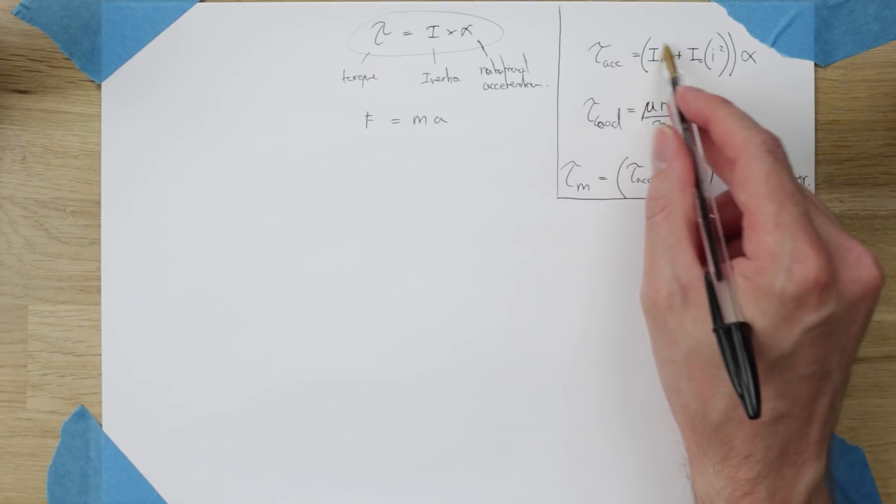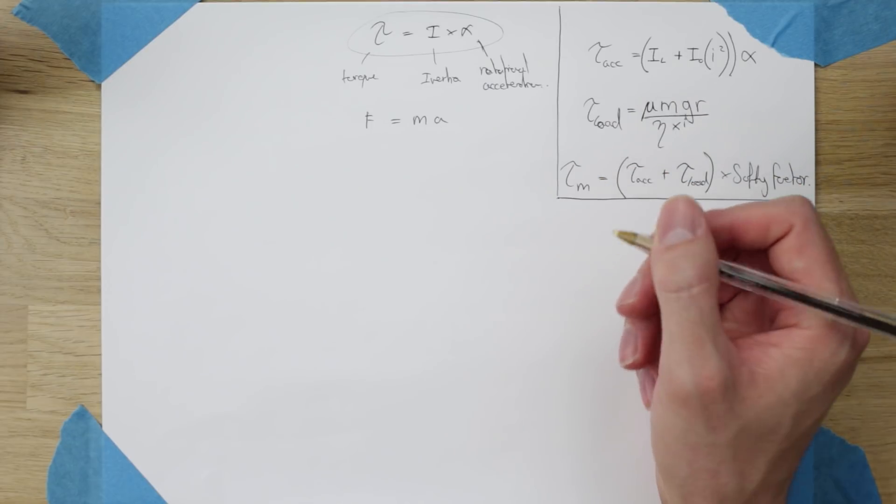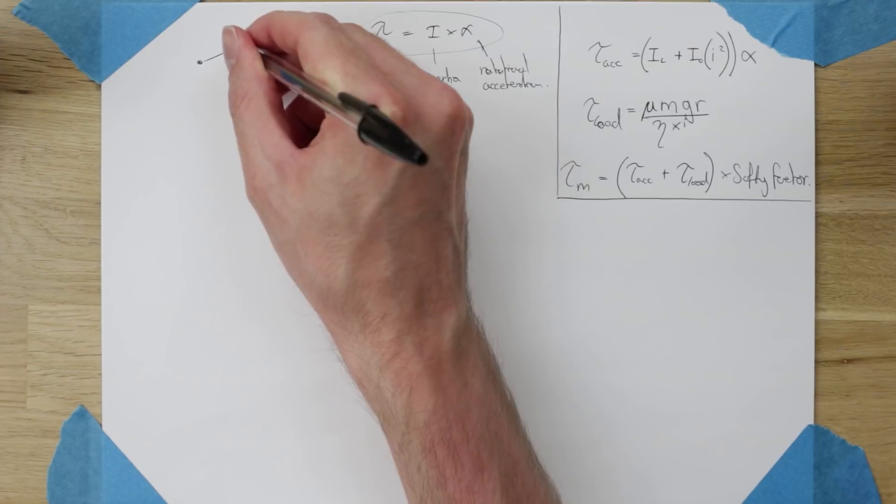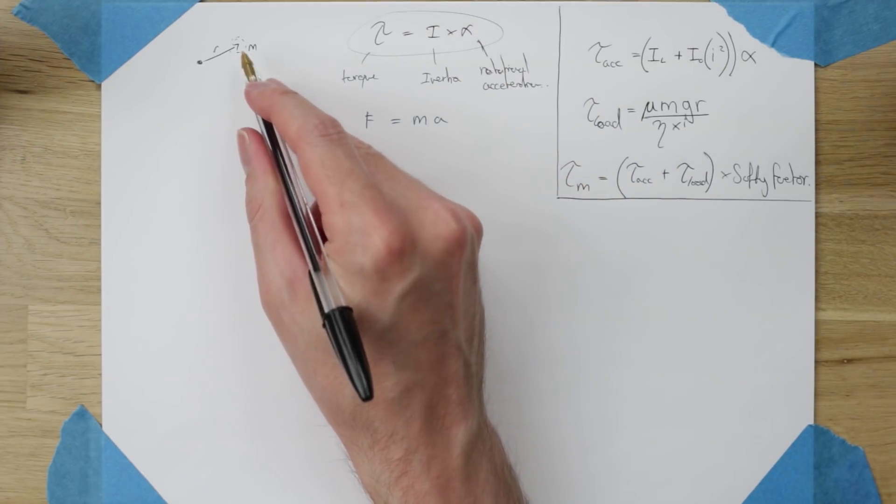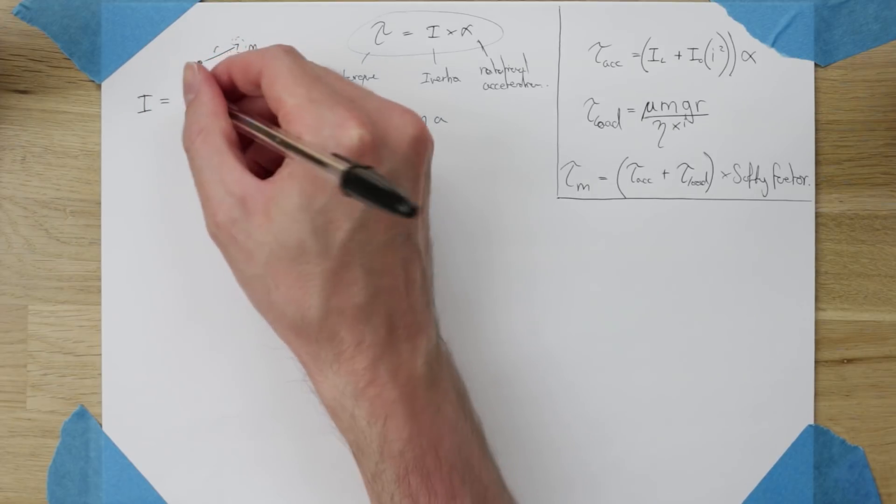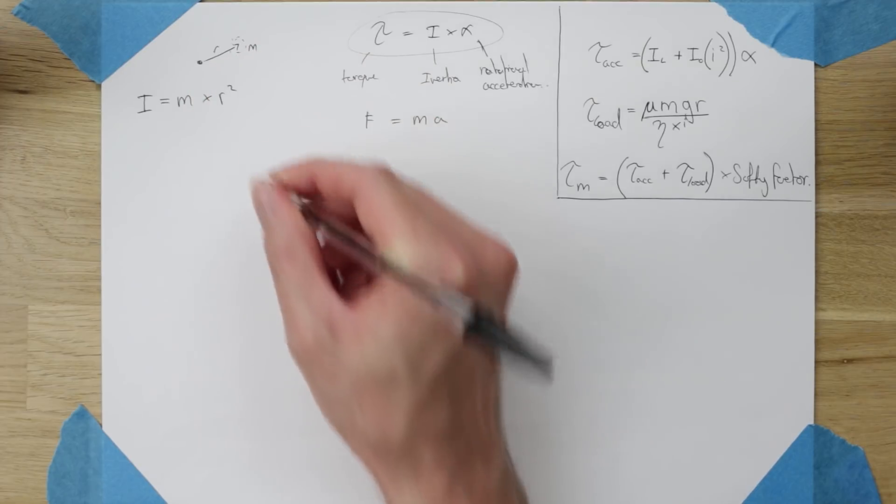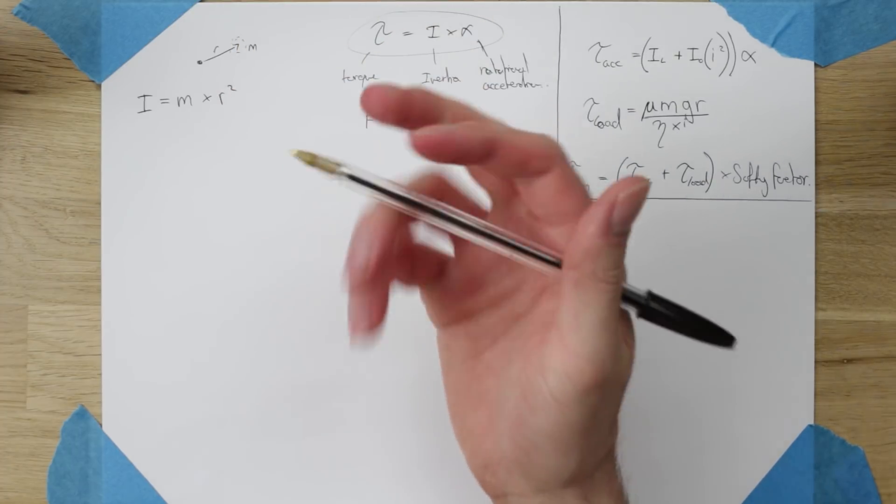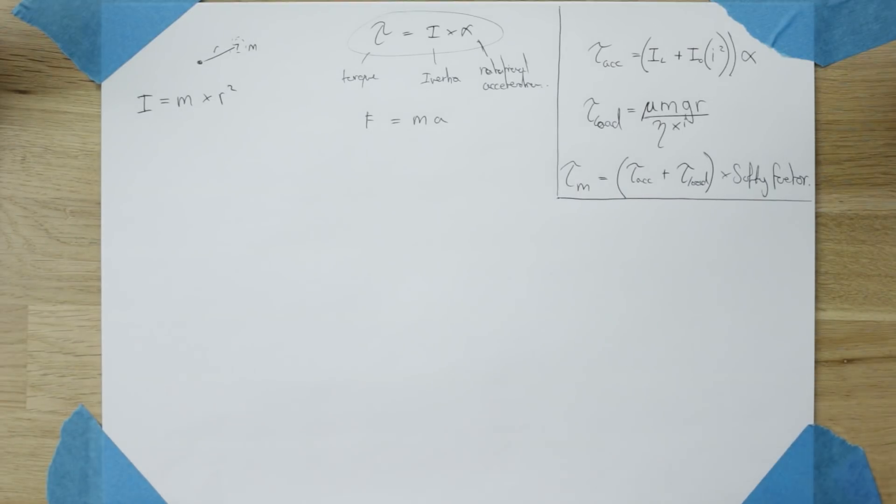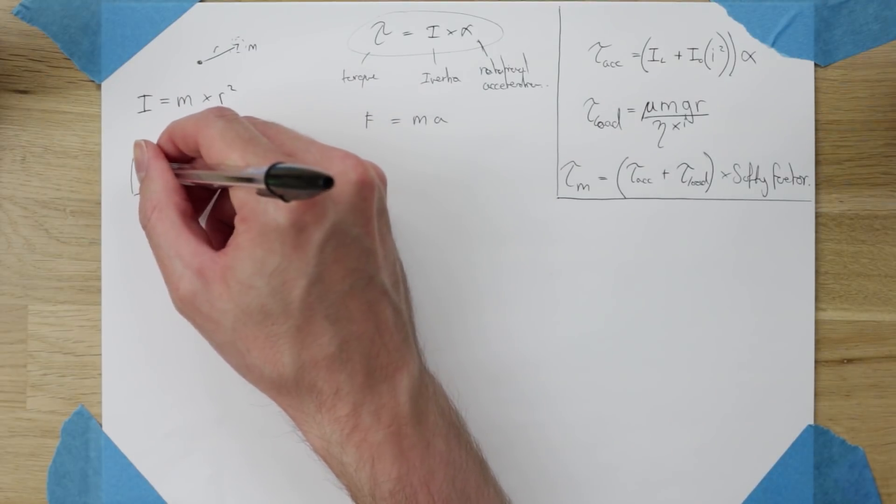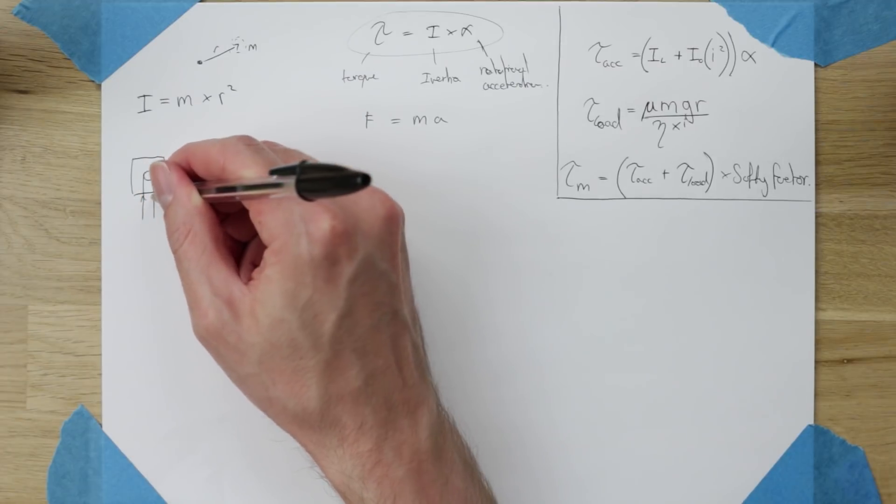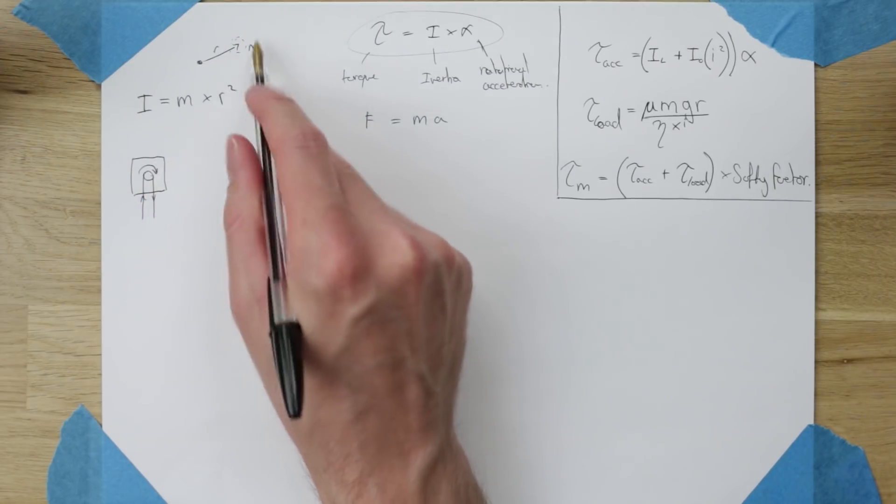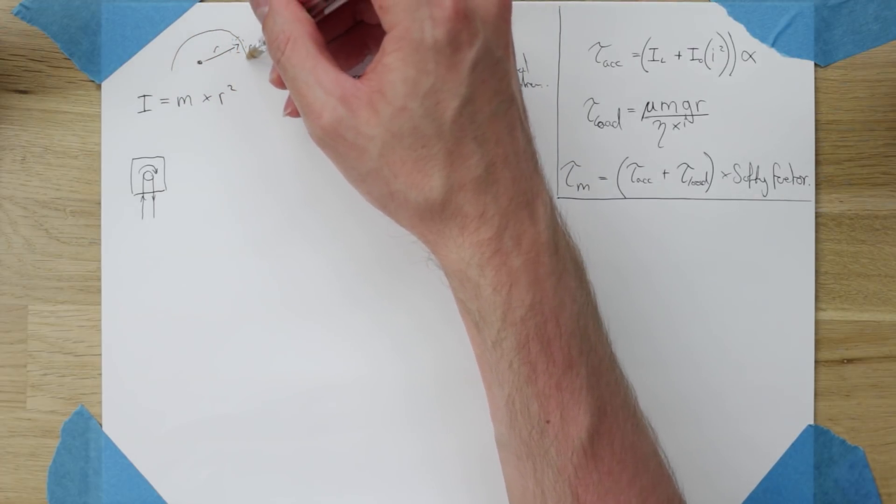So the first thing we want to find is this iL, the inertia of the load, which is quite an easy thing to find. In general, around a point, if you have a distance r to a point mass m, the inertia of that mass around that point is i which equals the mass m times the radius squared. In this instance we're looking at the specific load case for a stepper motor which has on it a pulley and is driving a belt. In this case we can still use this infinitesimally small mass because it's basically like an infinitesimally small surface which is the belt.